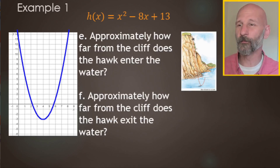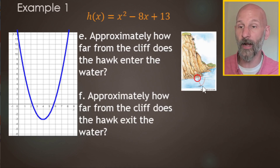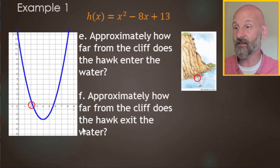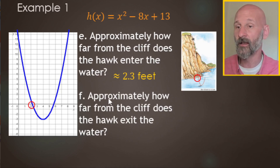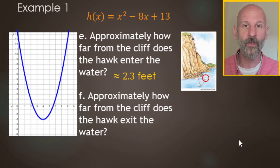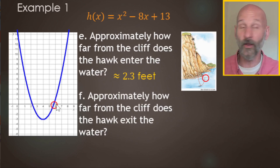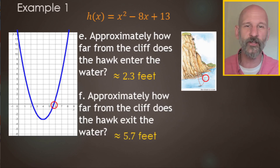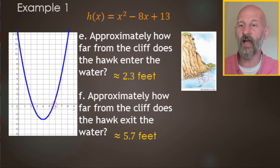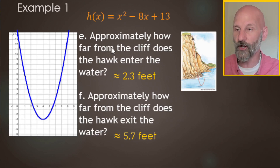Approximately how far from the cliff does the hawk enter the water? The hawk swoops down and enters the water where the parabola crosses the x-axis, our water level. That's an x-intercept between two and three, but closer to two — we'll call it about 2.3 feet. How far from the cliff does the hawk exit the water? That's the other x-intercept, between five and six but closer to six — approximately 5.7 feet. This shows how we can go from a function and equation to answering real-world questions using the graph.